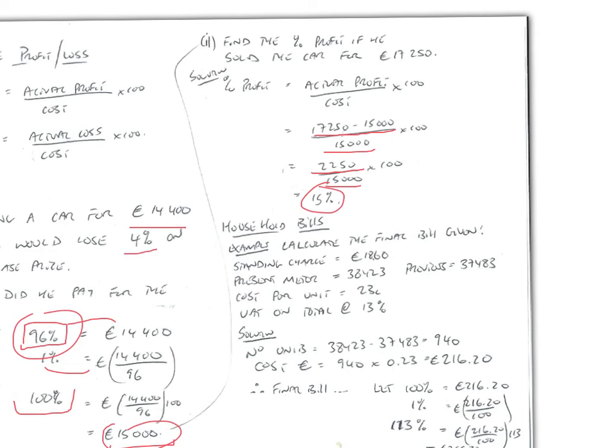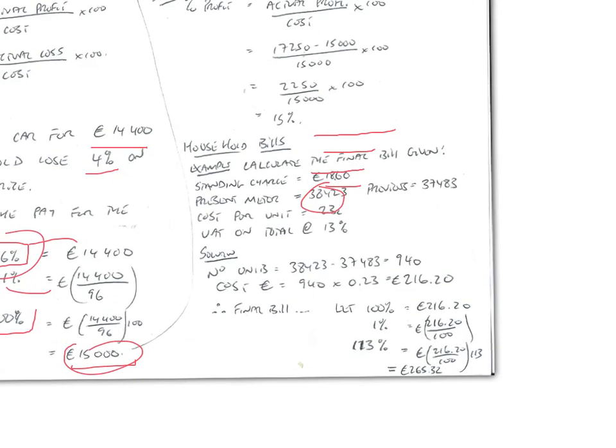Let's look at household bills next. Calculate the final bill given the following information for electricity. Standing charge, 1860. Present reading, 38423. Previous reading, 37483. Cost per unit, 23 cents. VAT and the total bill at the end, 13%.